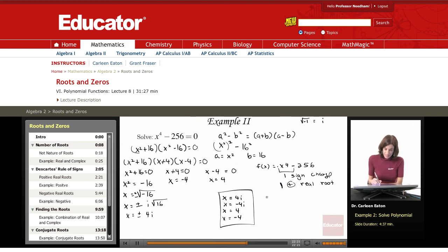Now looking at f of negative x, this gives me negative x to the 4th minus 256. Well, this negative 1, when you take it to the 4th power, it's just going to become positive. So this gives me this.